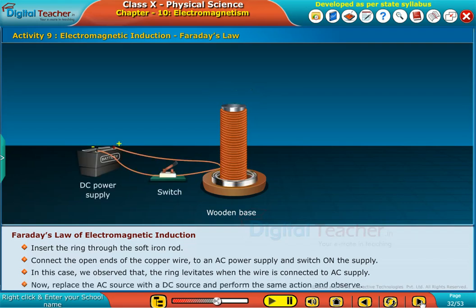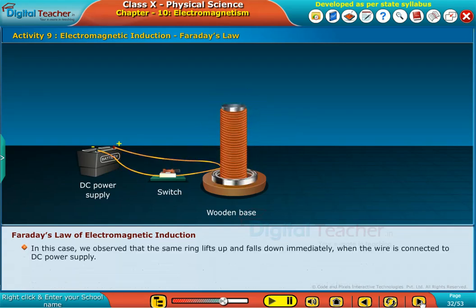Now replace the AC source with the DC source and perform the same action and observe. In this case, we observe that the same ring lifts up and falls down immediately when the wire is connected to DC power supply.